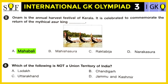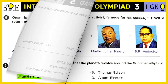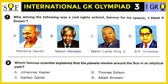Question number six: Which of the following is not a union territory of India — Ladakh, Chandigarh, Uttarakhand, or Jammu and Kashmir? The correct answer is Uttarakhand. Uttarakhand is a state, while the others — Ladakh, Chandigarh, and Jammu and Kashmir — are union territories.